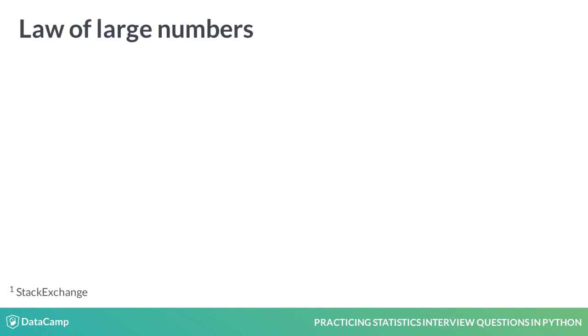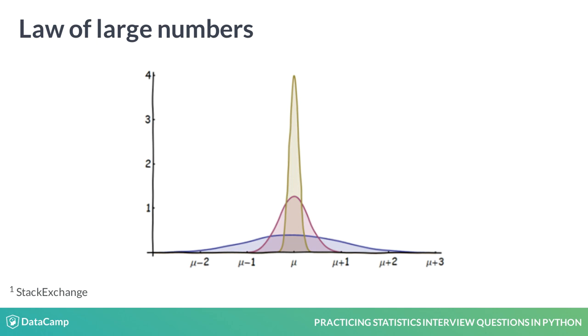It's also worth mentioning that this is different than the law of large numbers. The law of large numbers states that as the size of a sample is increased, the estimate of the sample mean will more accurately reflect the population mean. We see this here with the purple, red, and gold distributions representing small, medium, and large samples respectively. This is different from the Central Limit Theorem, though it's easy to get mixed up in a high-stress interview setting.